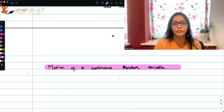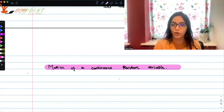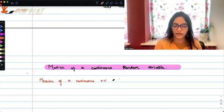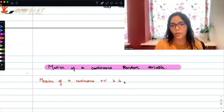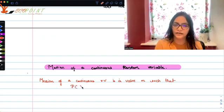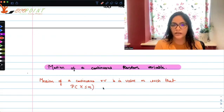So let's formally write down what median of a continuous random variable is. The median of a continuous random variable is a value m such that probability that x is less than or equal to m is equal to 0.5.